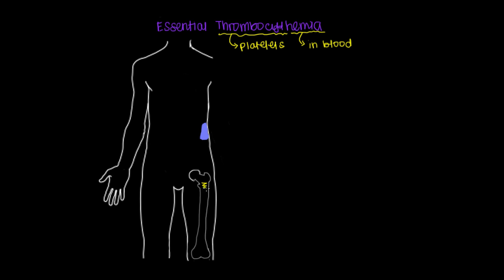Platelets are first generated in the bone marrow, and remember the bone marrow is located in the shaft of long bones like our femur. It all begins with this cell, which is called a pluripotent, meaning with the ability to do many things, hematopoietic stem cell.